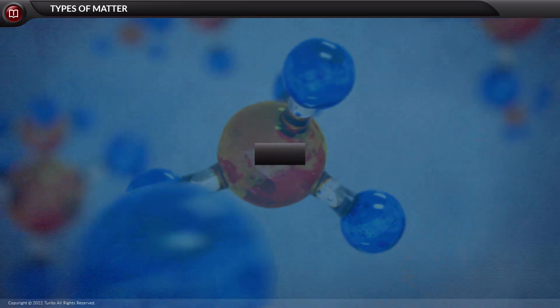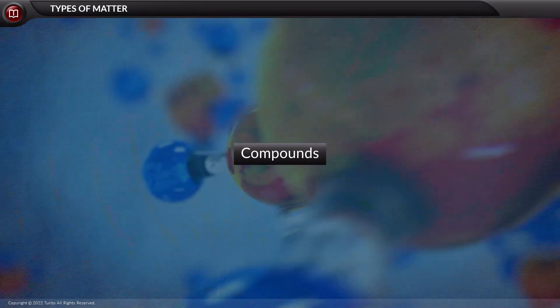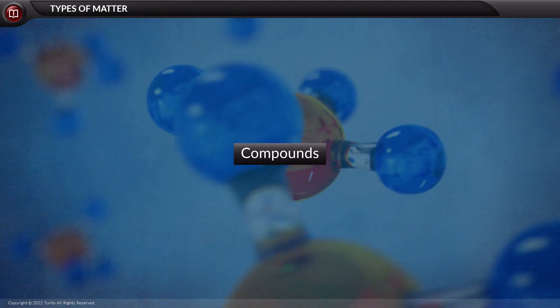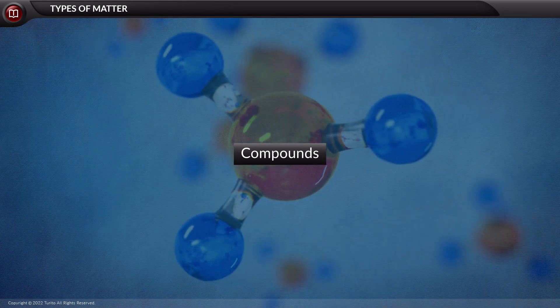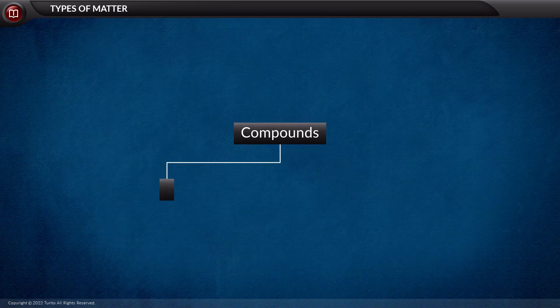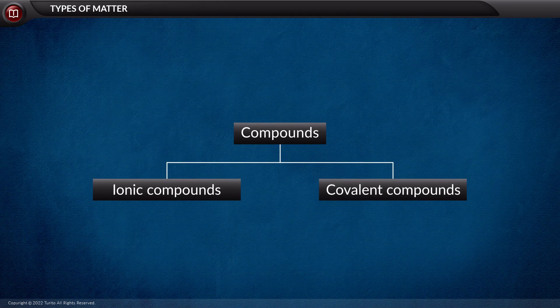The next type of pure substances is compounds. Can you recollect the different types of compounds we have? Yes, it is of two types of compounds which are ionic compound and covalent compound.